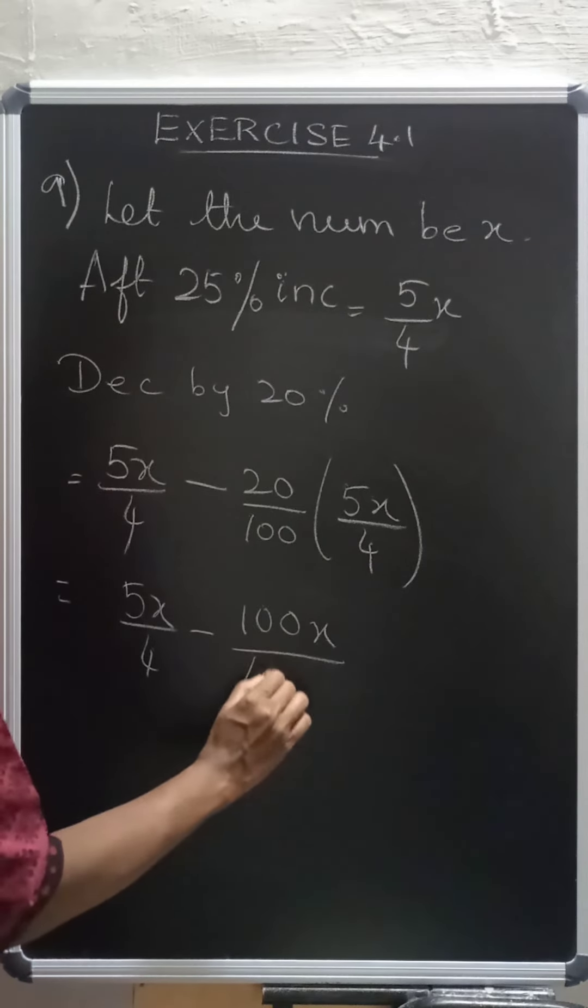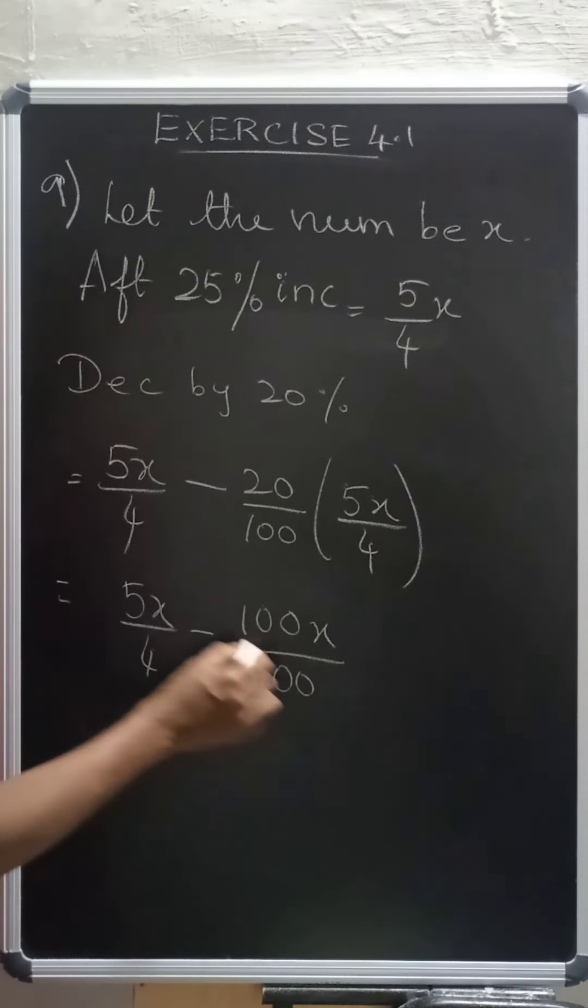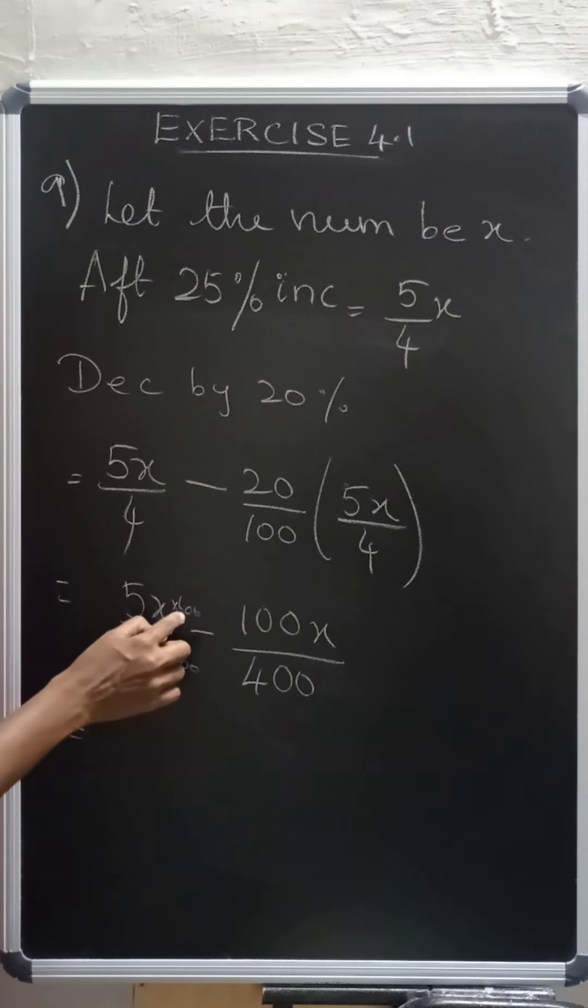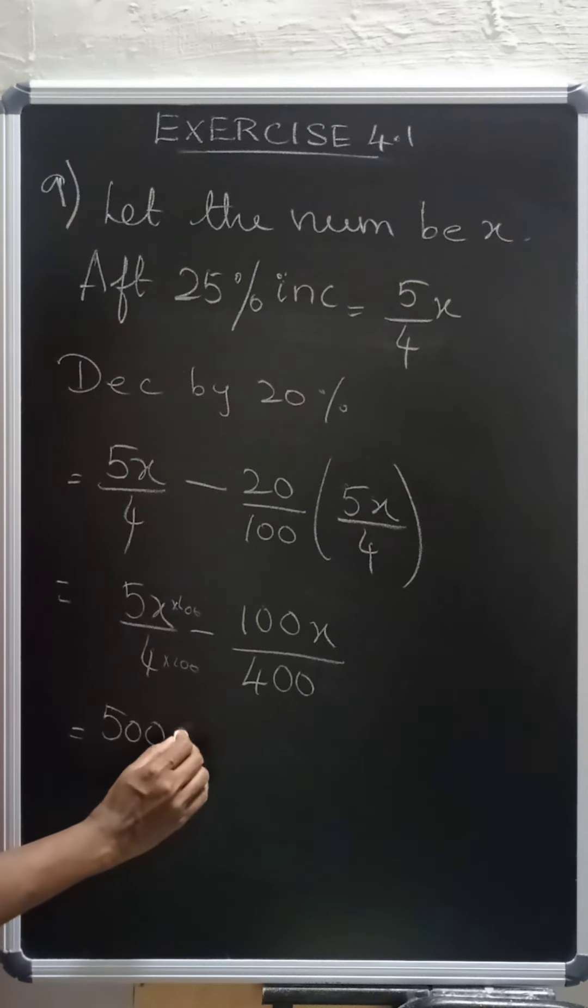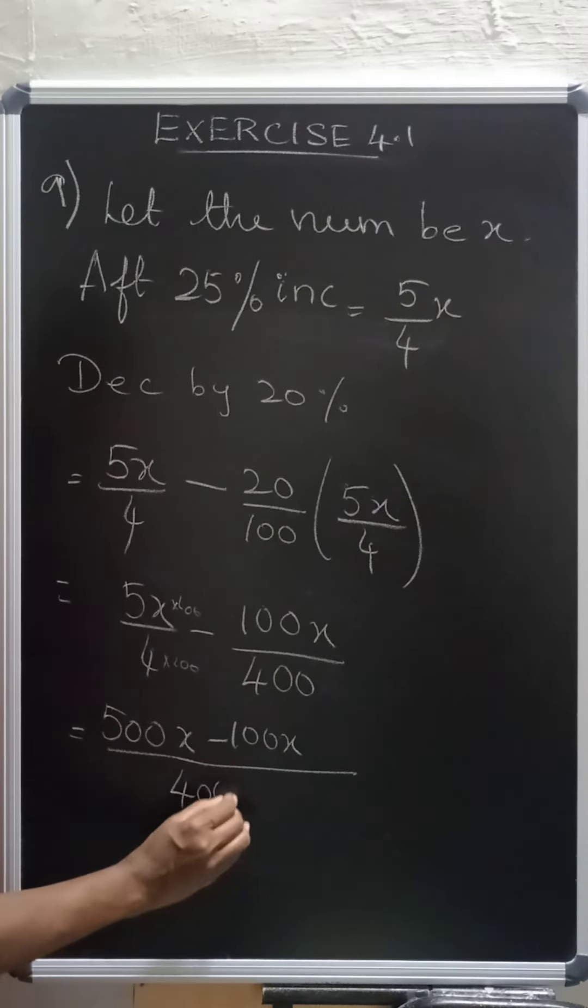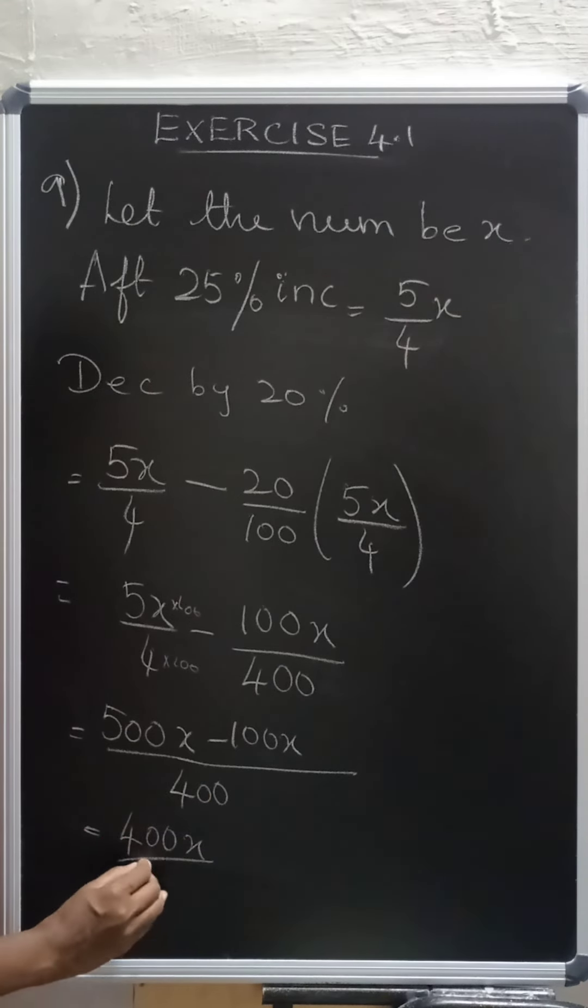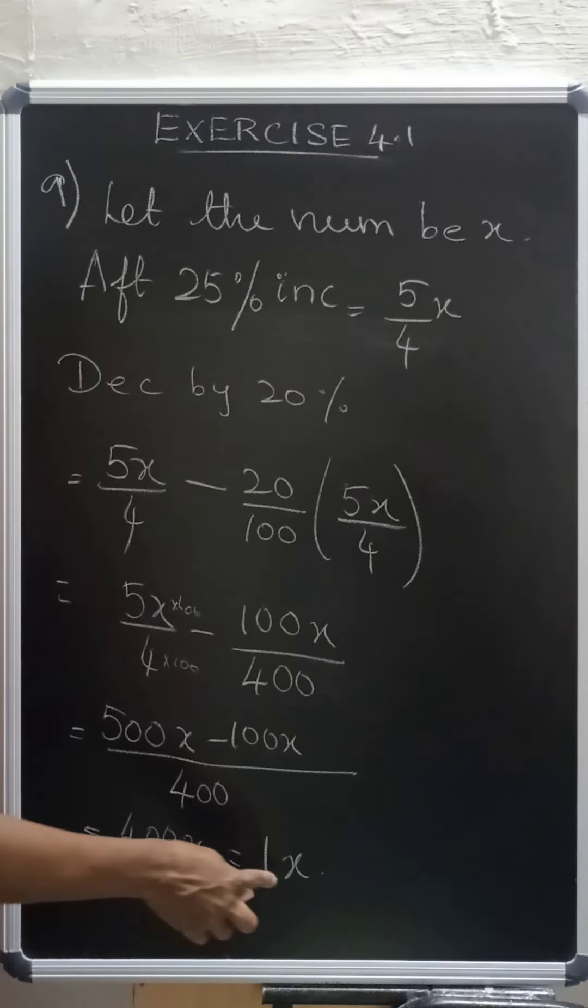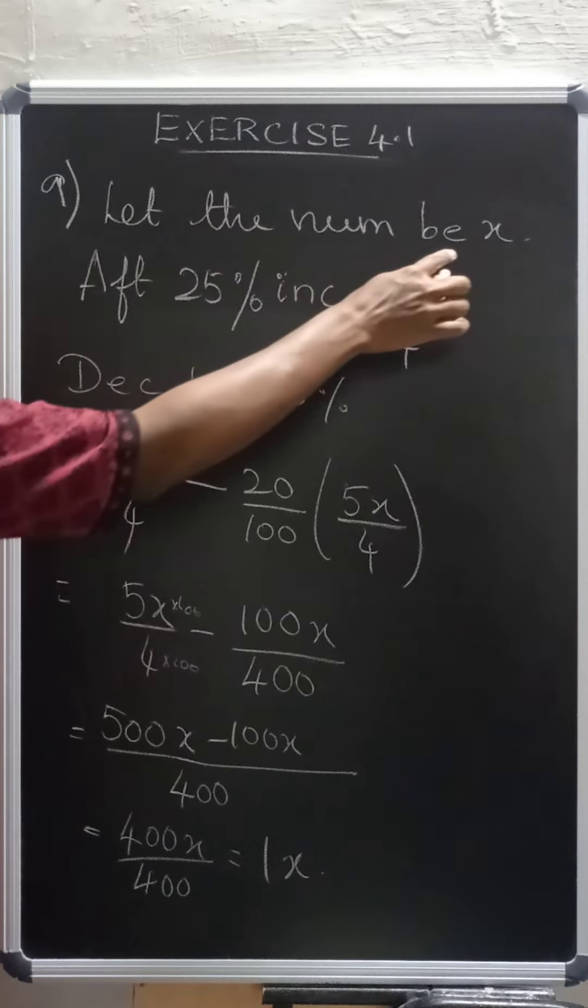100x by 4 into 100 is 400. Now on taking LCM, here 4 is there. So 4 into 100 will give you 400. So this also you need to multiply by 100, equivalent fractions. So 5 into 100 is 500. 500x minus 100x by 400.